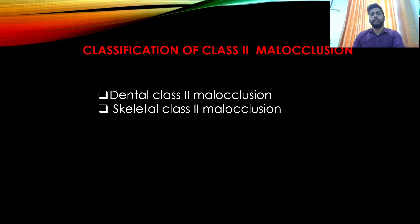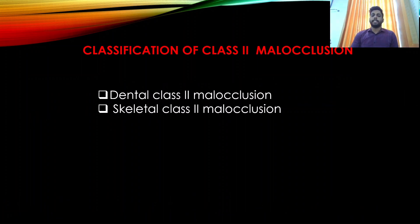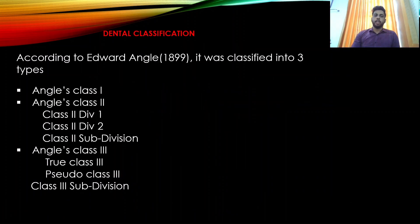Coming to the classification, Class 2 is classified into dental Class 2 and skeletal Class 2. Edward H. Angle in 1899 gave the classification, categorizing malocclusion into three types according to molar relation: Class 1, Class 2, and Class 3.